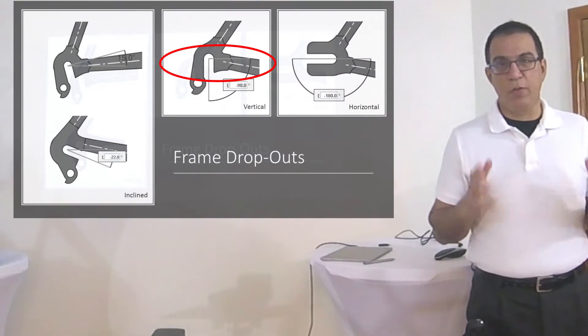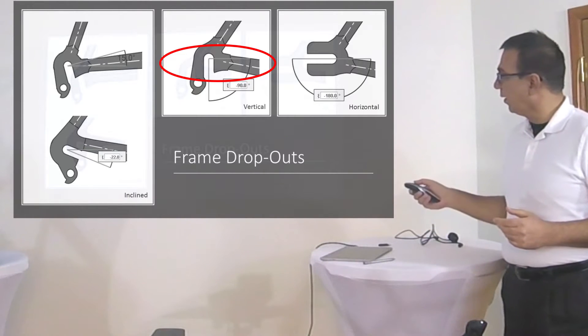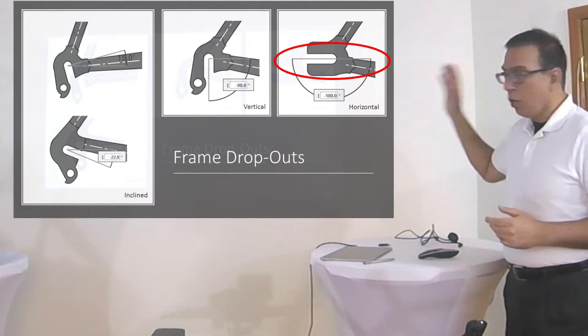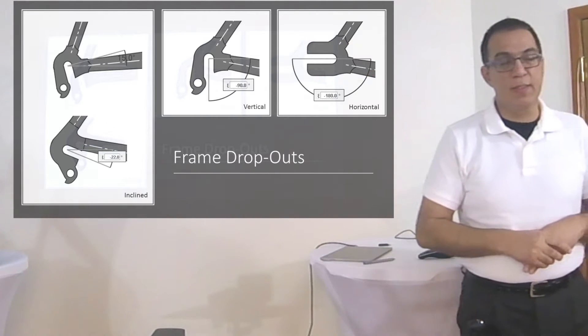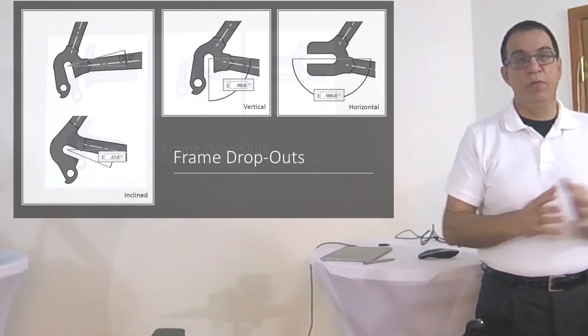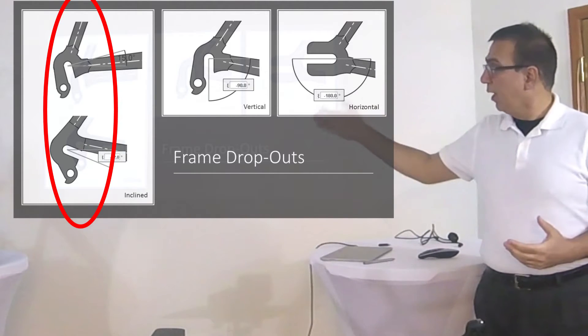90% of the dropouts we have are actually the vertical kind, which is in the middle. We also have horizontal dropouts which are used in certain bicycles and trikes, and there are also bicycles which use inclined dropouts.